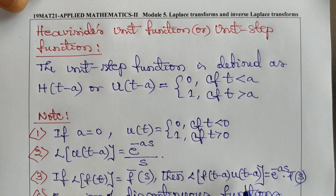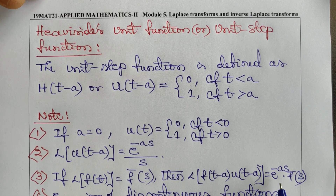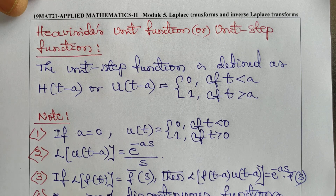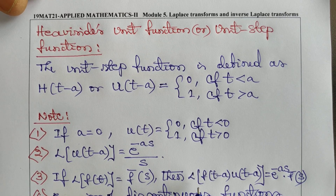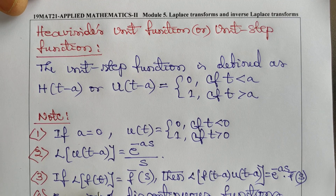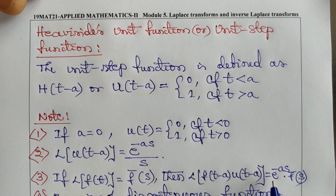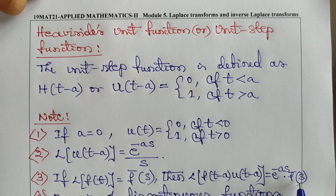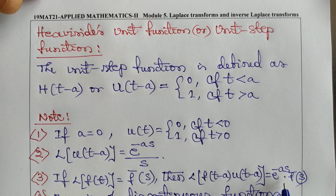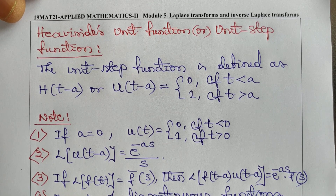Note 3 (Second Shifting Theorem): If the Laplace of f(t) equals F̄(s), then the Laplace of f(t - a)·u(t - a) equals e^(-as)·F̄(s), which is also written as e^(-as)·L{f(t)}. Please remember this — it is very important.